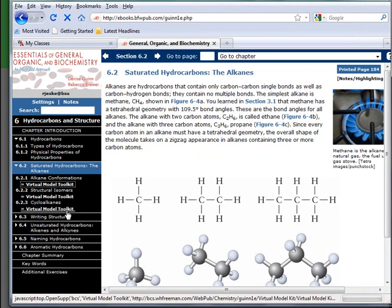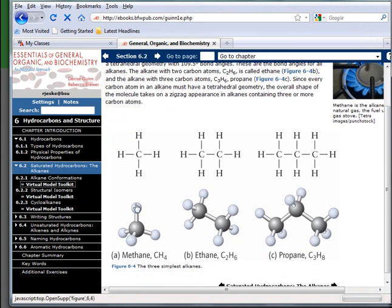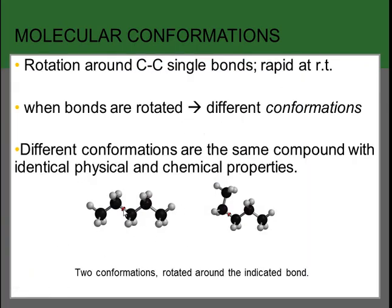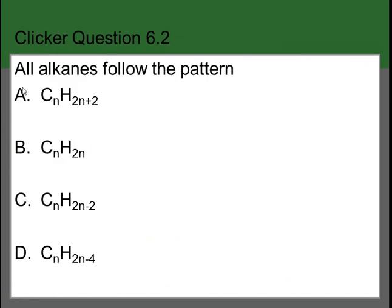We can rotate around carbon-carbon single bonds to make a new conformation — the same compound, just a different conformation. Clicker question 6.2: all alkanes follow which pattern? Remembering from the first section, the formula for an alkane is CnH2n+2. That formula indicates the hydrogen count for an alkane given a certain number of carbon atoms.